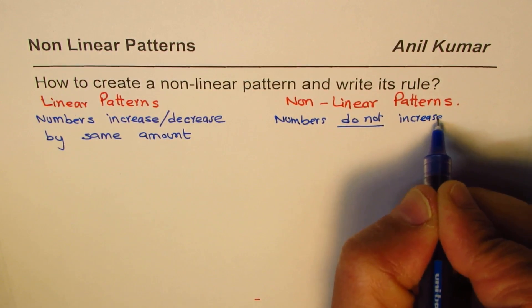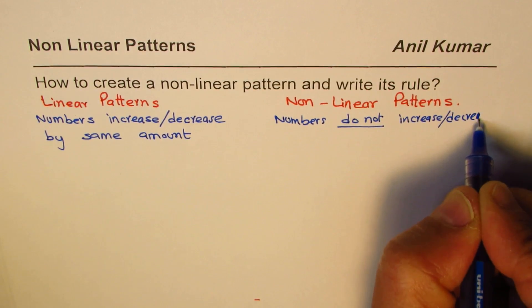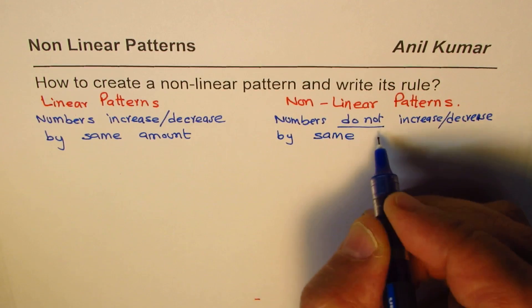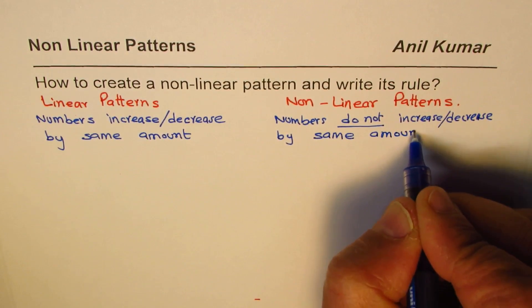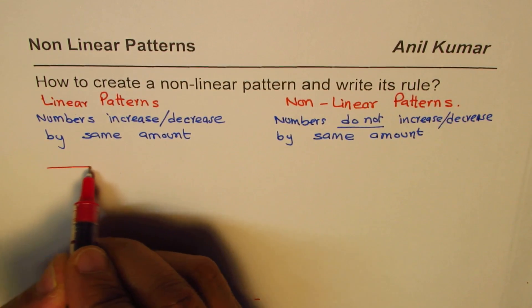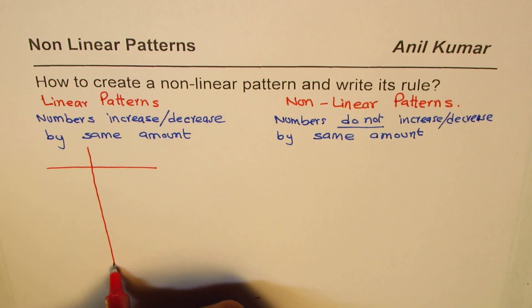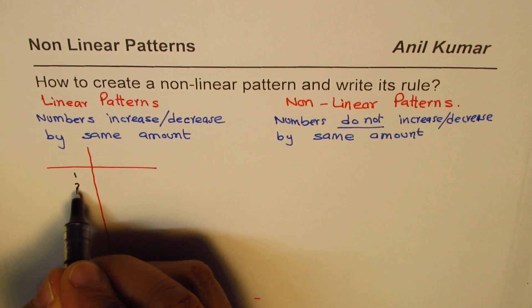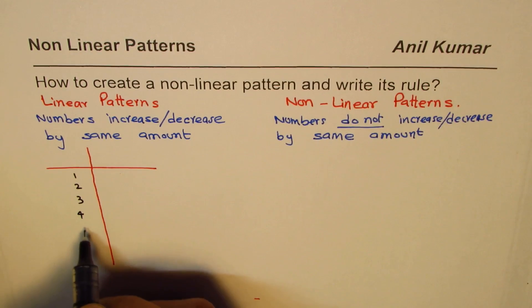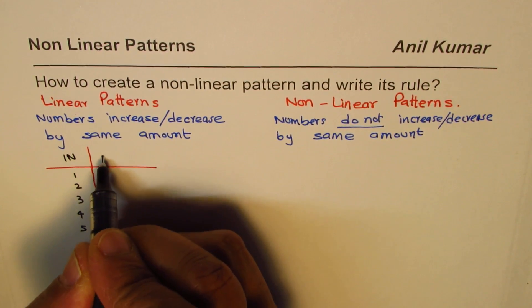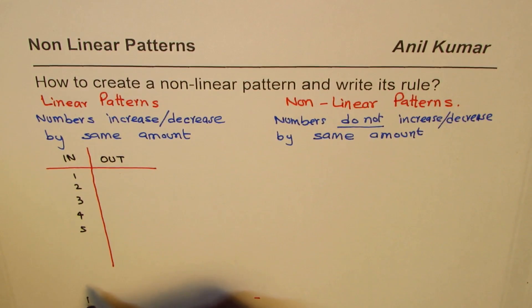Let's create a pattern to understand what this means. I'll write down numbers starting with one: one, two, three, four, five. Let's call this the input, and the corresponding values will be the output.